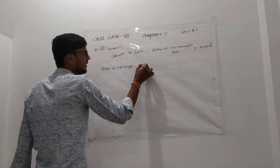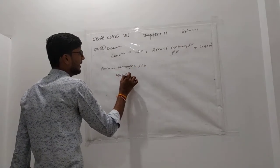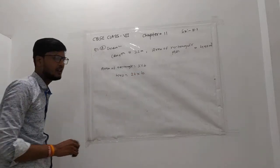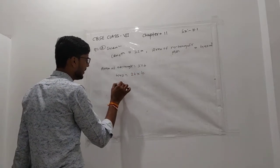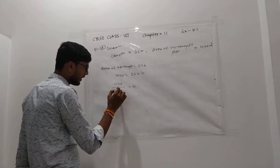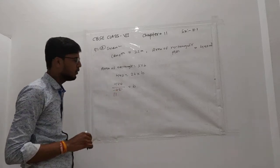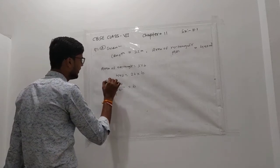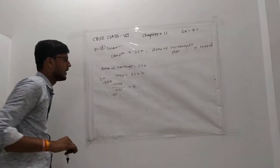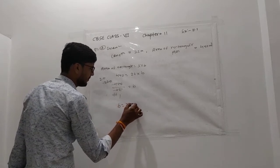We know that area of rectangle is length into breadth. Area of rectangle given is 440, and length given is 22. So 440 upon 22 equals breadth. Dividing 440 by 22 gives 20. So breadth is 20 meters.